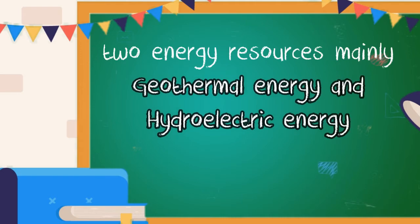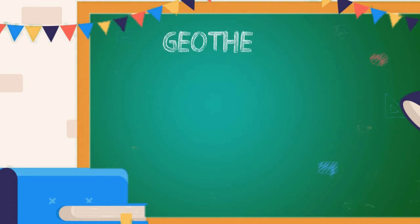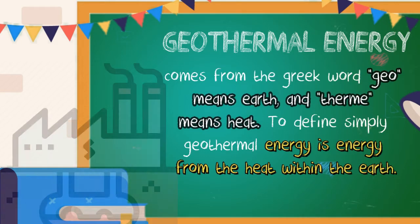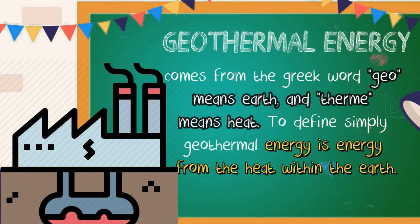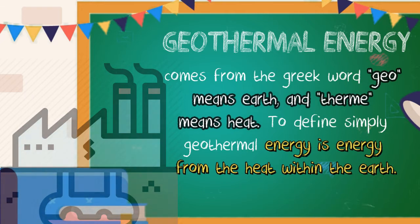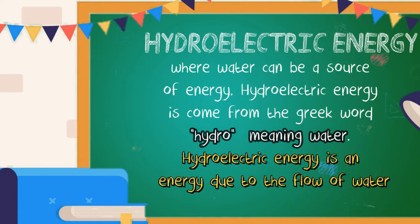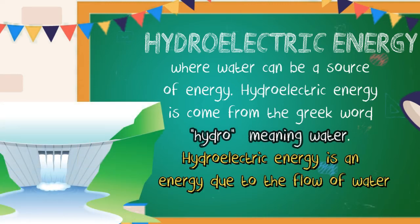In this lesson, we will focus on two energy resources: geothermal energy and hydroelectric energy. Geothermal energy comes from the Greek word 'geo,' meaning earth, and 'therm,' meaning heat. Simply defined, geothermal energy is energy from the heat within the earth. Hydroelectric energy comes from the Greek word 'hydro,' meaning water, and is defined as energy due to the flow of water.